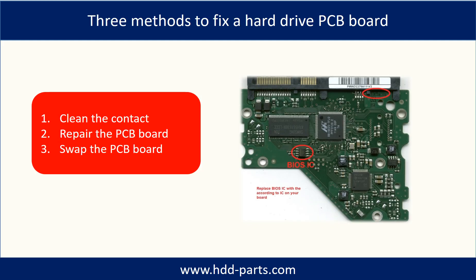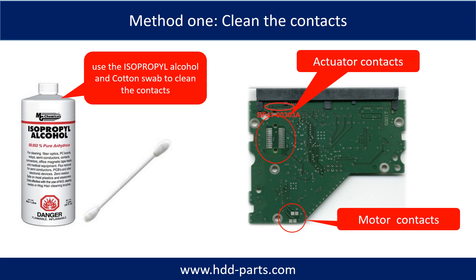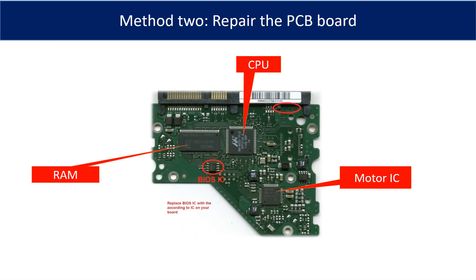There are three methods to fix a hard drive PCB board: one, clean the contacts; two, repair the PCB board directly; three, swap the PCB board. Method one is to clean the contacts. Cleaning the contacts on the PCB board and also on the hard drive can fix the problem caused by poor connection. The most vulnerable parts on the PCB board are the power supply circuit and motor IC.